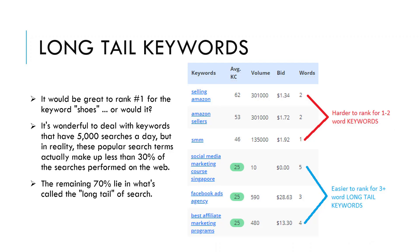Look at this graphic. Don't even try to rank for that generic search phrase. Rather, create a blog or a page with titles and meta descriptions using these long tail keywords, such as men's shoe size — insert size — or red Nike men's running shoes.